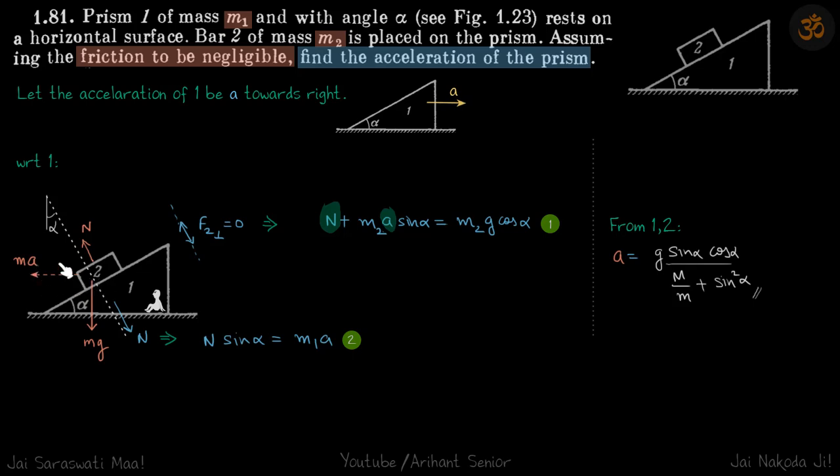Block 2 is sliding on the surface with respect to 1, so acceleration of 2 in this direction is 0 with respect to 1. In this direction, forces are balanced on 2, so N plus M2 a sine alpha equals M2 g cos alpha. That is our first equation.